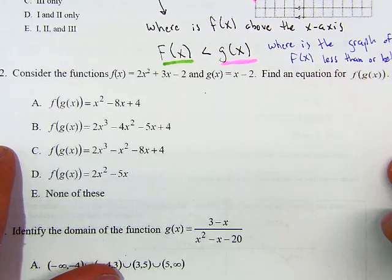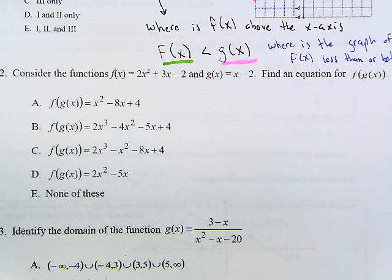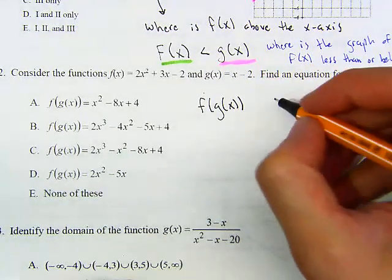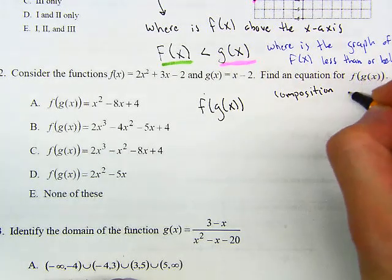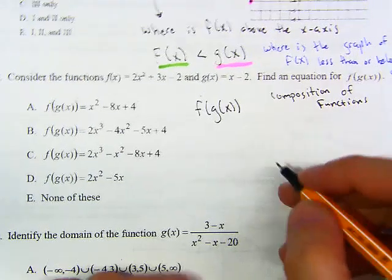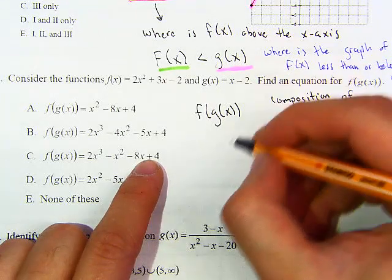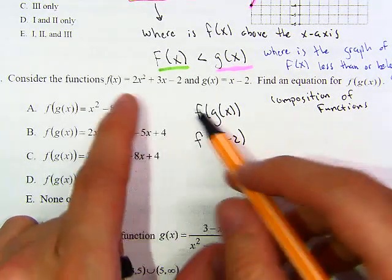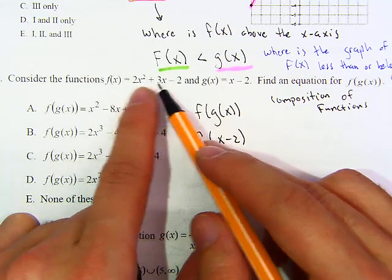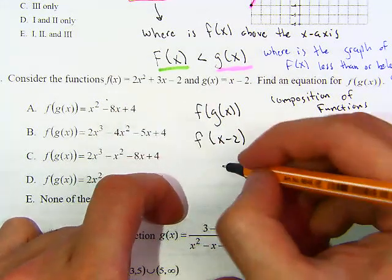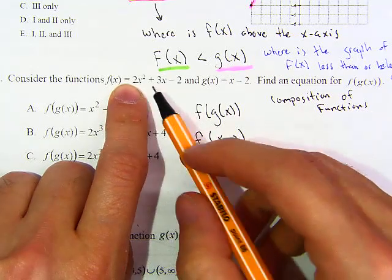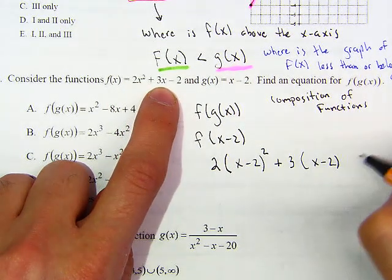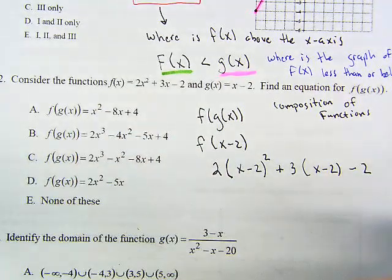Next question: consider f(x) = 2x² + 3x - 2 and g(x) = x - 2. Find f(g(x)) — this is what we call a composition of functions. Our g(x) = x - 2, so we now have f(x - 2). We plug x - 2 into f(x) everywhere we see x, giving us 2(x-2)² + 3(x-2) - 2.